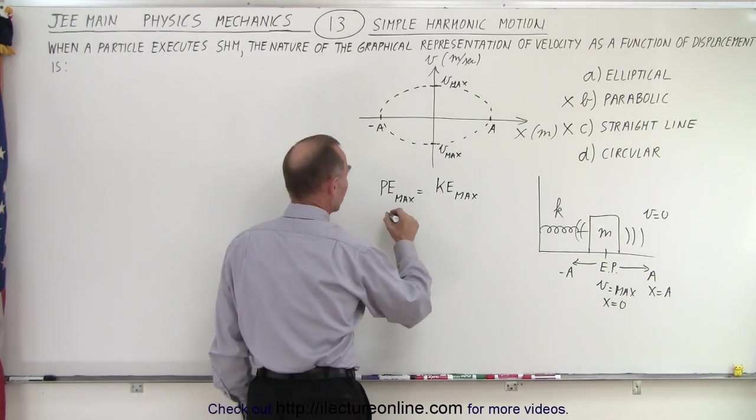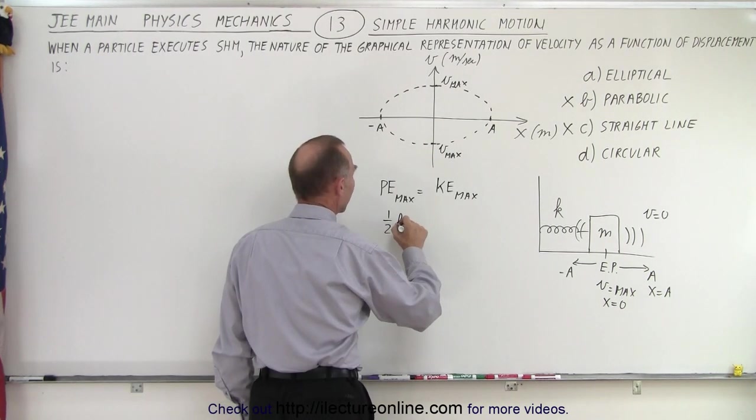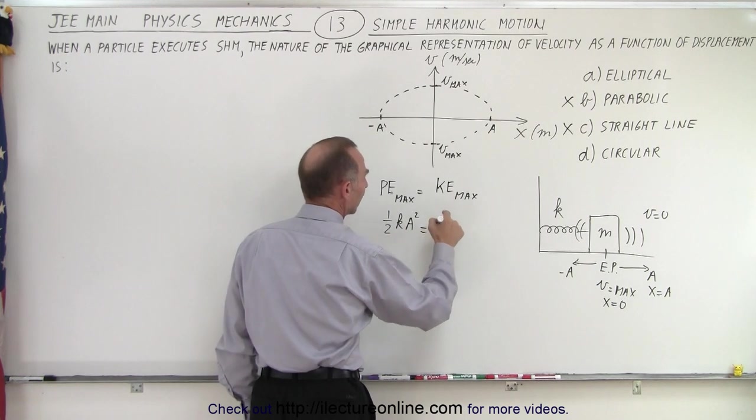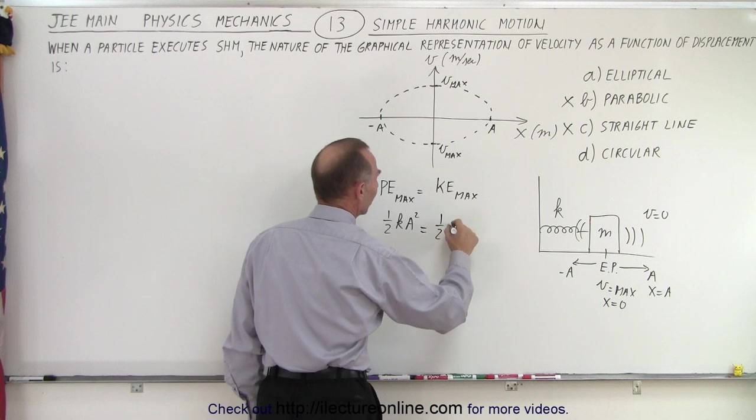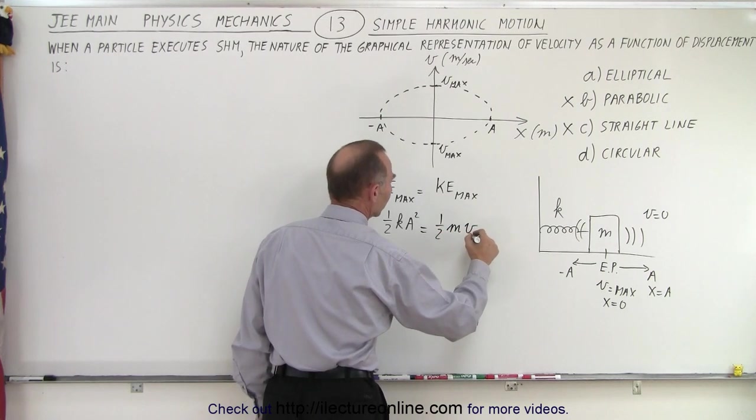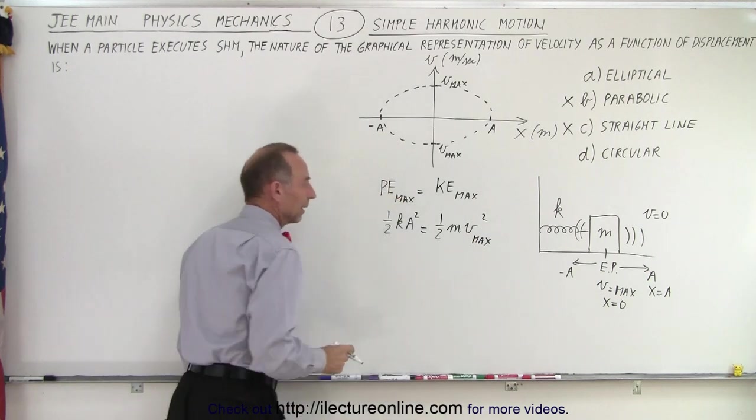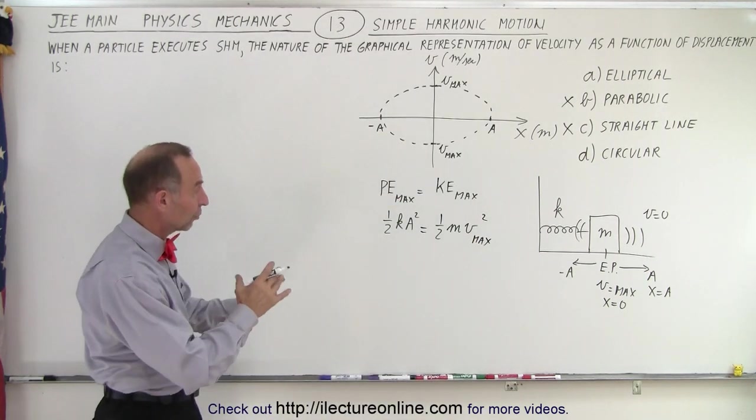And potential energy max would be one-half kA squared when x is its maximum amplitude, and kinetic energy max would be one-half mV max squared.